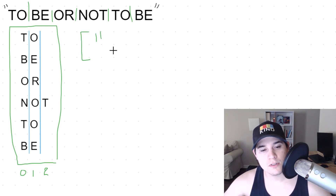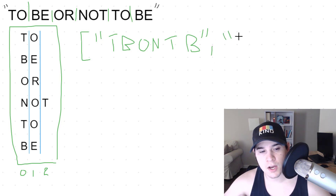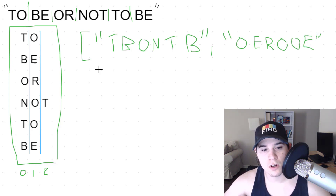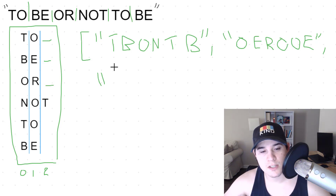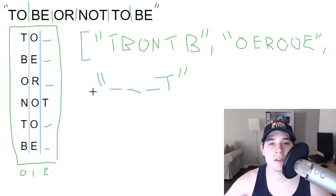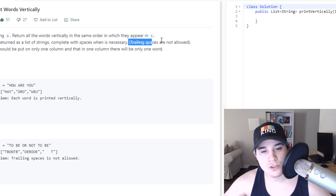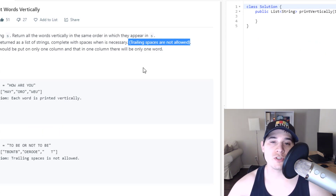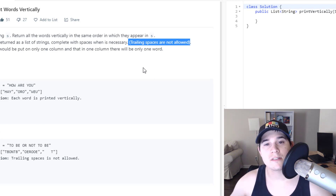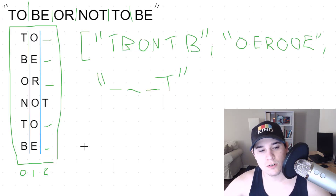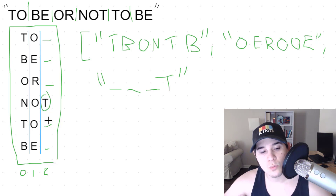So we would return T, B, O, N, T, B — that would be column zero. Then we have O, O, E, R, O, O, E — that's the first column. And then in the last column, we would need to return a space, space, space, and then T. The reason why we're not accounting for those extra spaces is because the problem description says trailing spaces are not allowed. So we do not want to take any spaces after our last index that has a character. The very last character in column two is T, so everything after T needs to be removed.